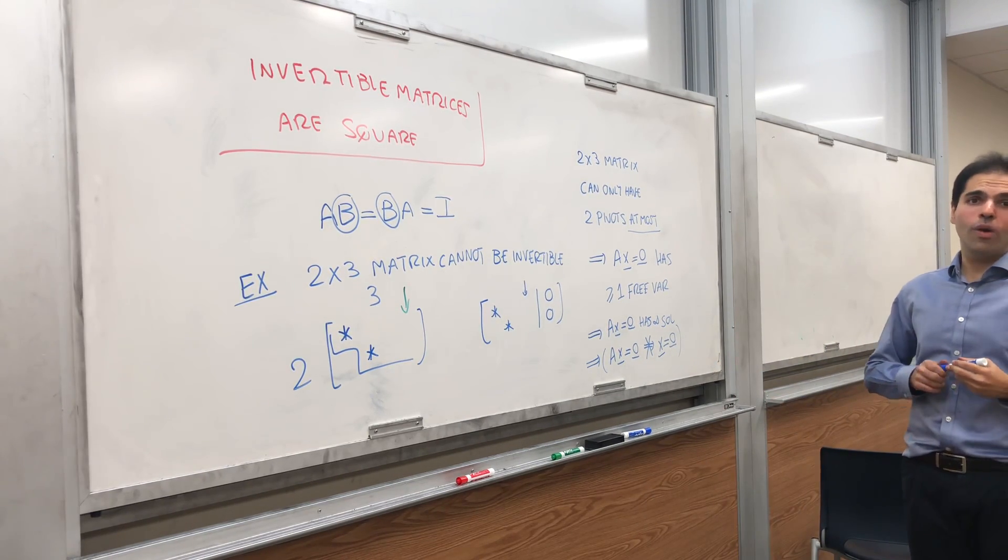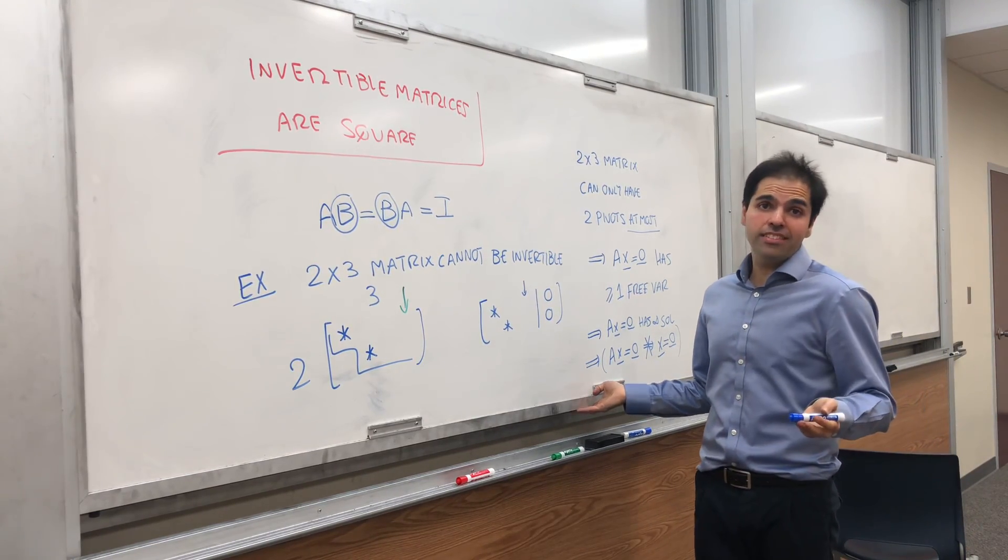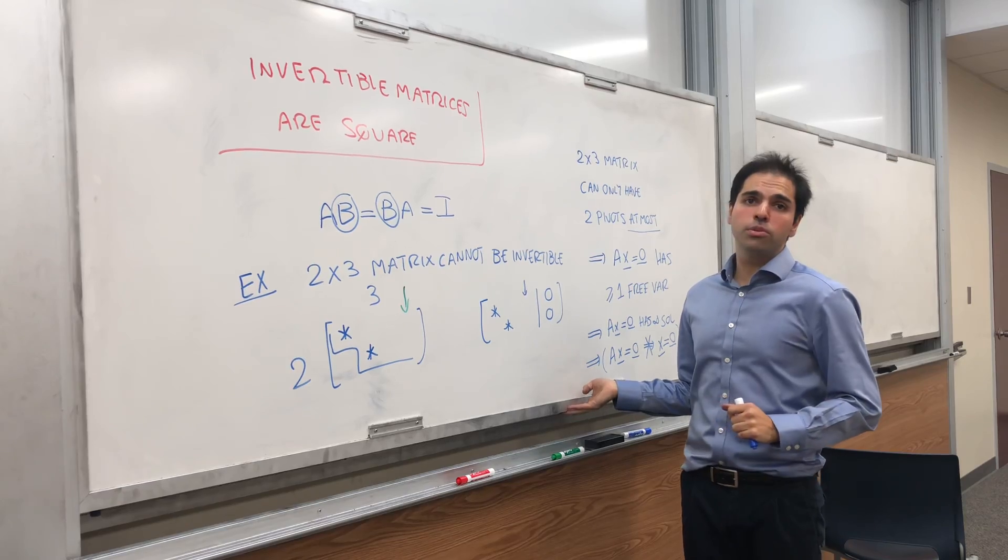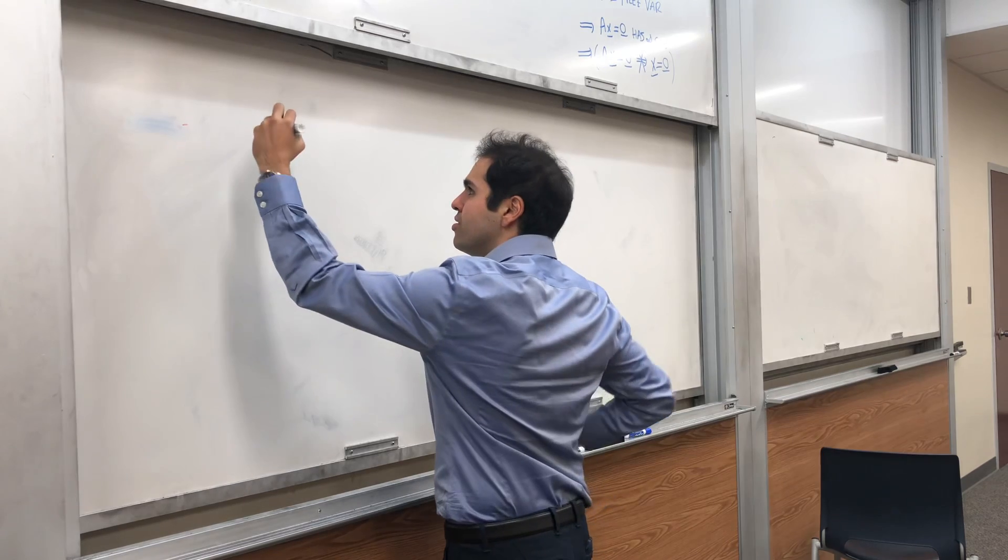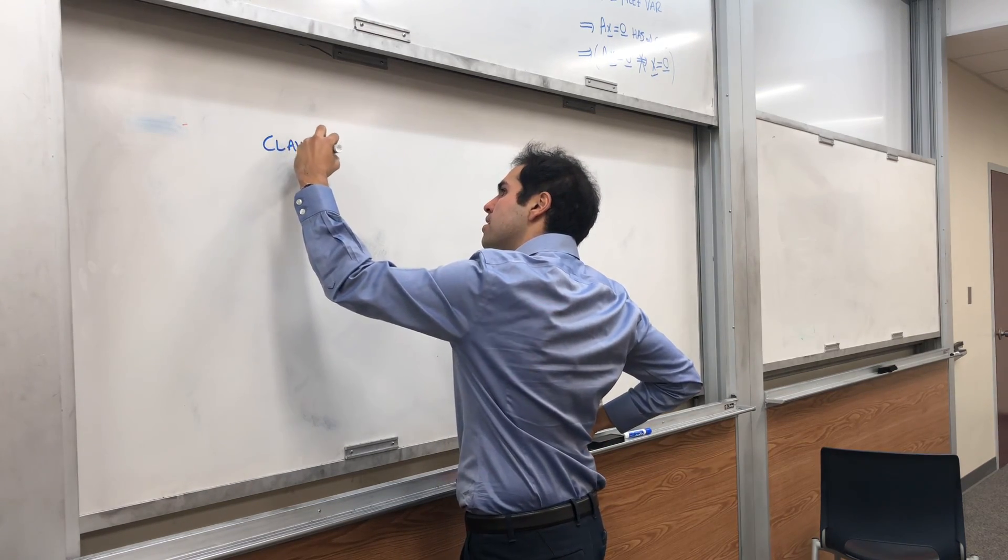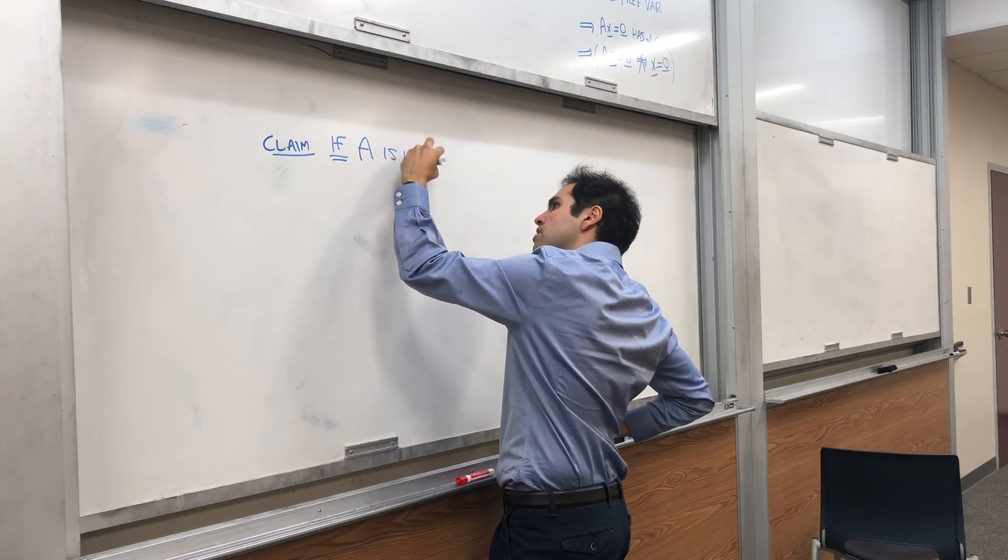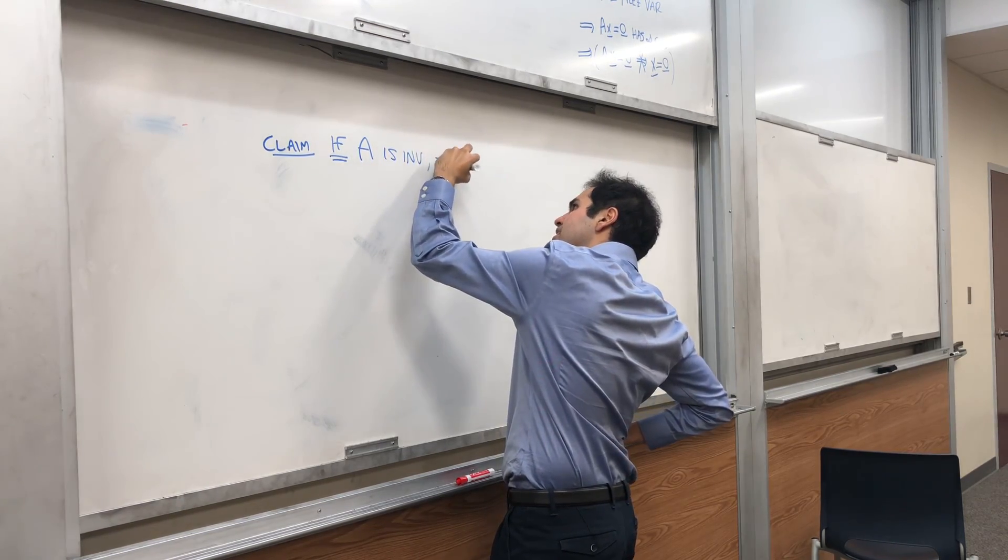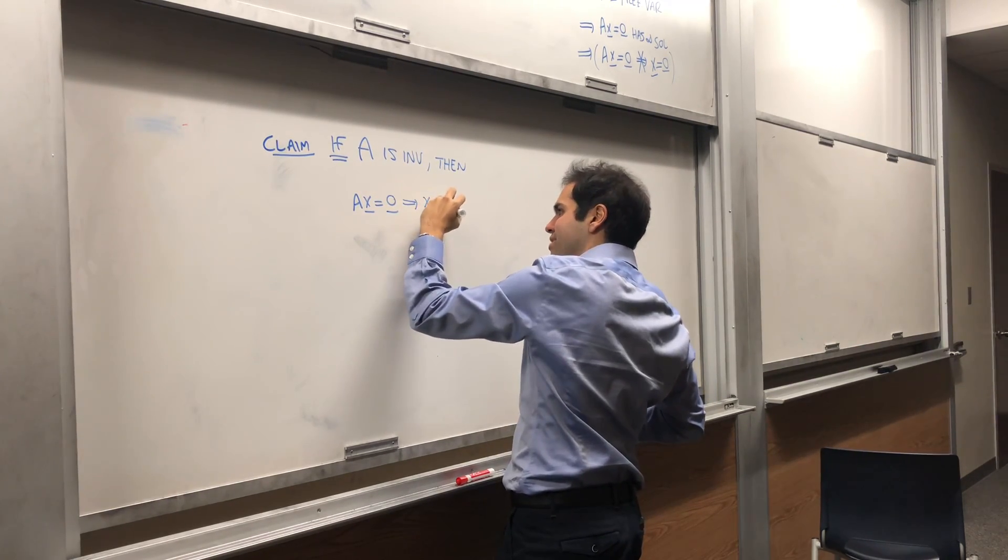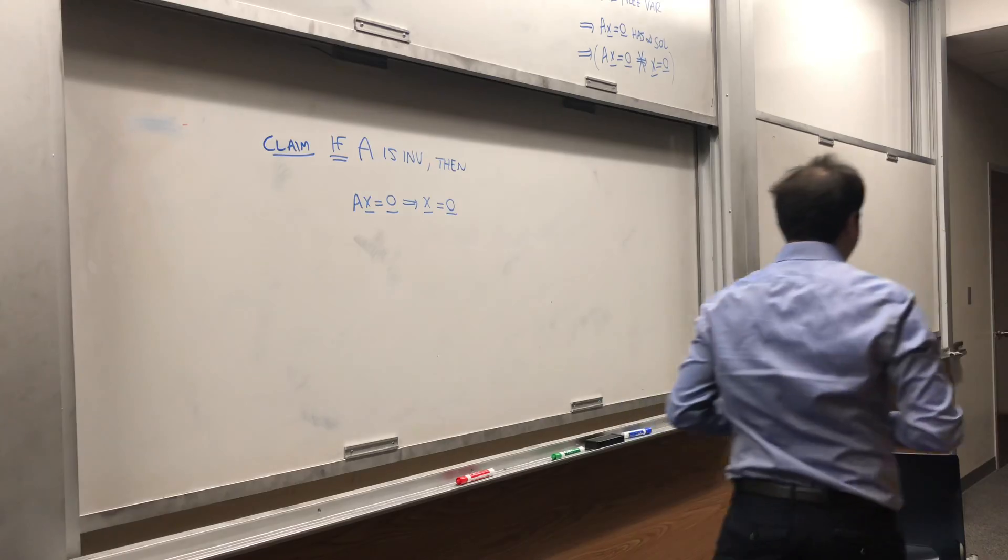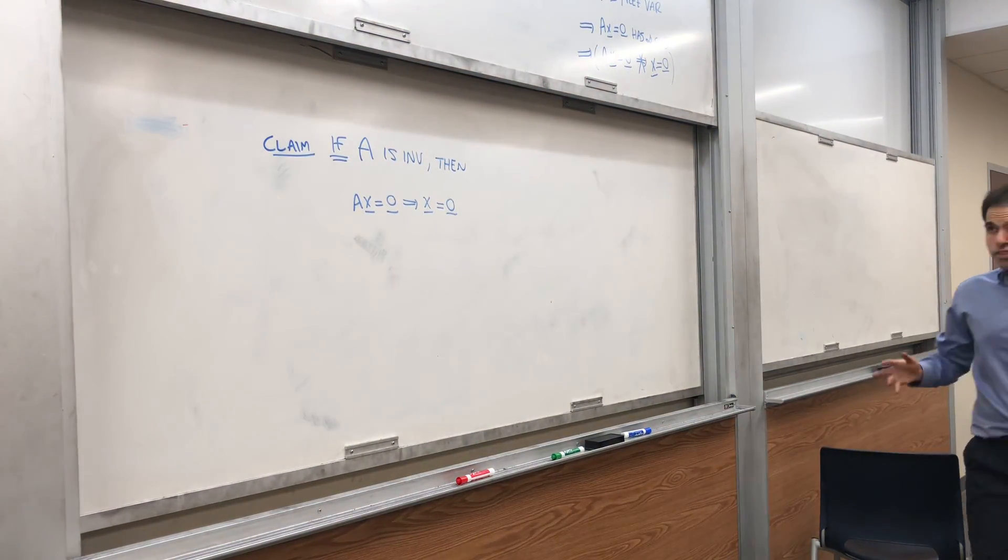Remember that Ax equals 0 is always consistent. It always has at least a 0 solution. But because it has at least one free variable, it means it has to have infinitely many solutions. So Ax equals 0 has infinitely many solutions. In particular, it doesn't just have the trivial solution. So the most important part is that Ax equals 0 does not imply x equals 0.